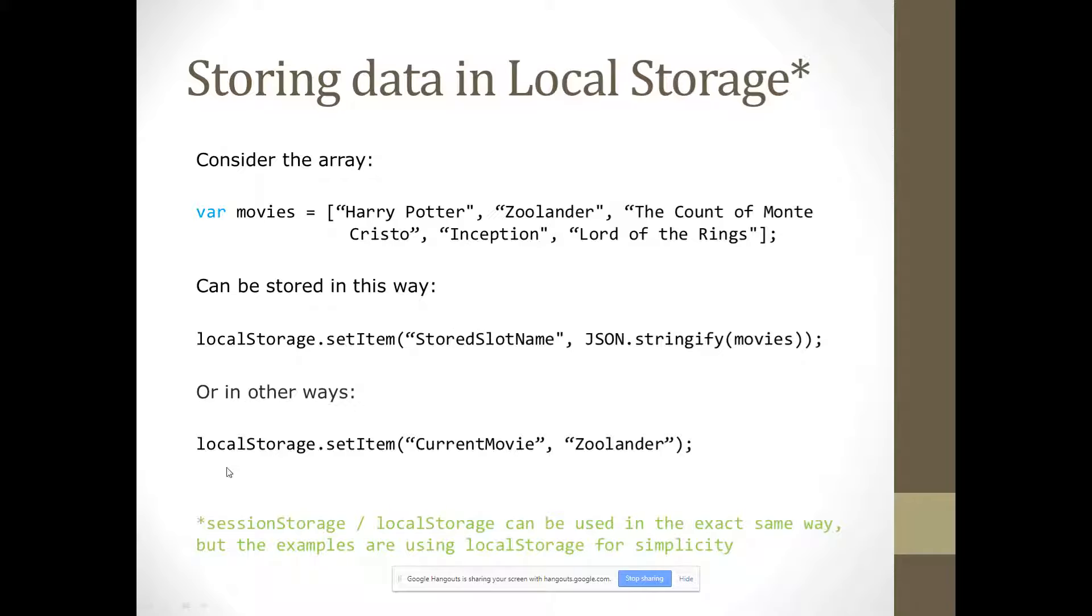So, we're storing that string as a JSON of movies into this slot name. Or another way we could do it is individual things, localStorage.setItem, current movie, Zoolander. If the movie I'm watching right now is Zoolander. So, that's stored in that way.